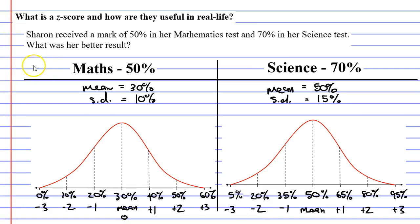Now, let's look at these marks. In maths, she got 50%, which I'm going to label here. That was a Z-score of positive 2. We'll write that down. Z-score of positive 2. And then she got 70% in science.